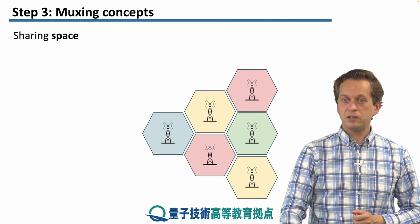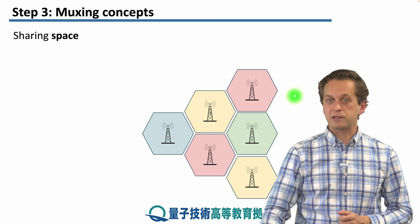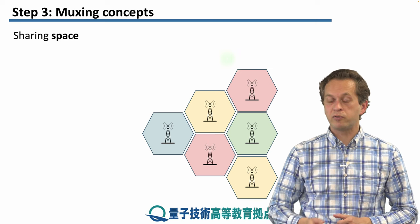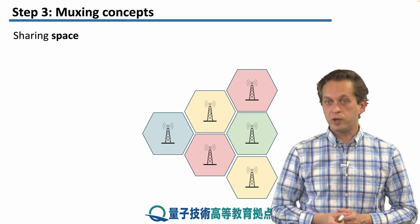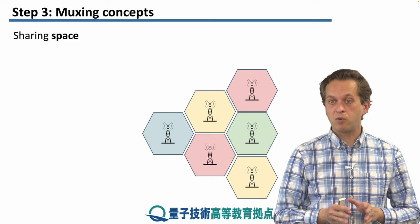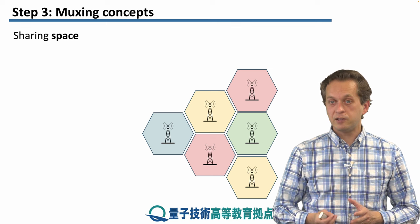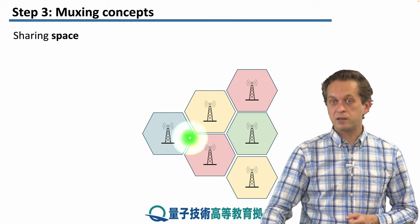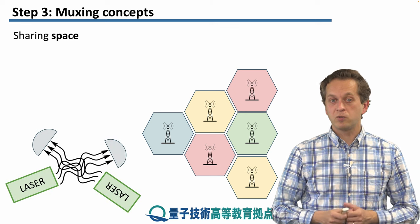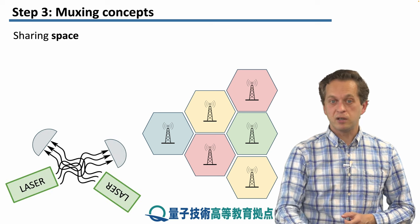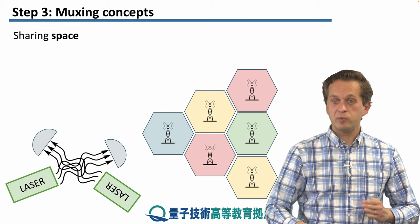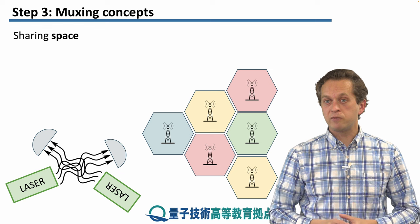How do we share space? Imagine a city represented by six hexagons, and we're trying to cover its area with cellular signal. One way is to build a very large, powerful cellular tower in the middle. Or we can divide the free space into smaller hexagons and build smaller towers responsible for covering only their own hexagon. It turns out that subdividing the city into smaller parts and covering each with its own tower is much better. Also, we share space when using photons to carry information — since photons don't really interact, two crossing beams trivially share space.